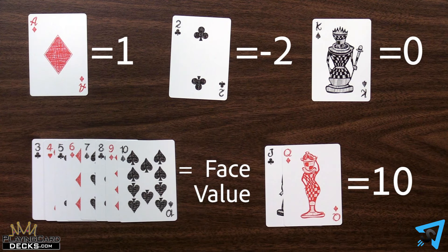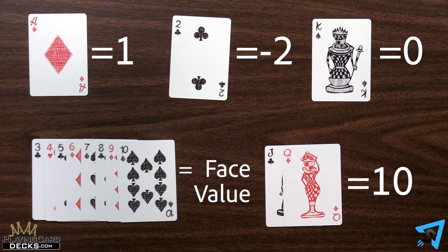Each ace is worth 1 point. Each 2 is worth minus 2 points. Cards 3 through 10 are each worth their face value, queens and jacks are each worth 10 points, and each king is worth 0 points.